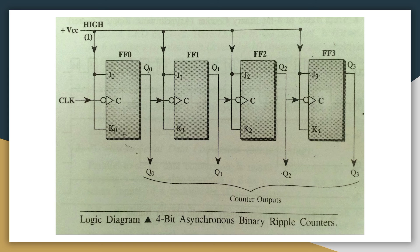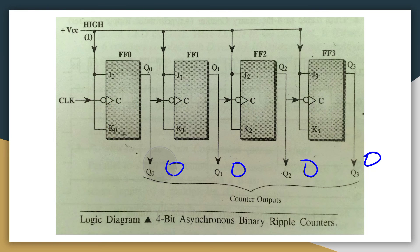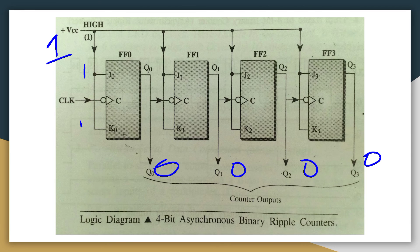Initially, before applying voltage, the output is 0000 — all flip-flops are reset to zero. When the voltage is applied, J and K become 1, so the content toggles. The output changes from 0 to 1. So the output after the first clock pulse is Q0 = 1.